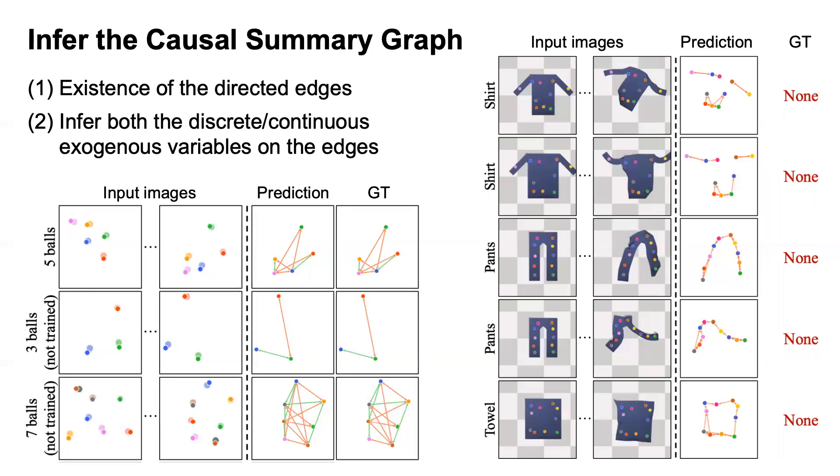The inference module then discovers the edge set of the causal summary graph and outputs a posterior distribution over both the discrete and continuous parameters associated with the directed edges. The figures show that our model recovers the ground truth graph in the multi-body environment and captures the underlying connectivity structures in the cloth environment.